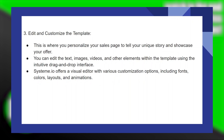This is where you personalize your sales page to tell your unique story and showcase your offer. You can edit the text, images, videos, and other elements within the template using the intuitive drag-and-drop interface. System.io offers a visual editor with various customization options, including fonts, colors, layouts, and animations.